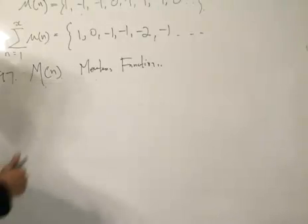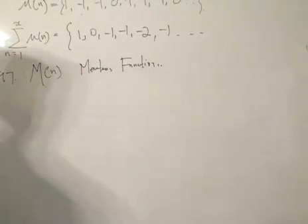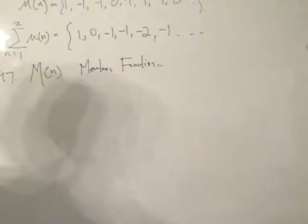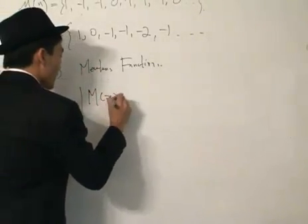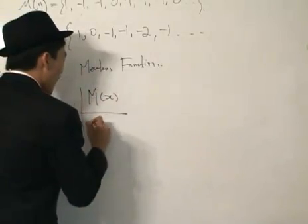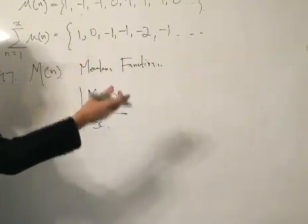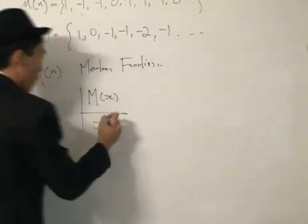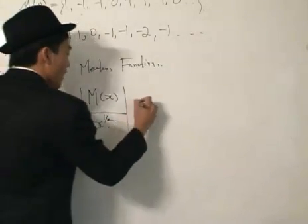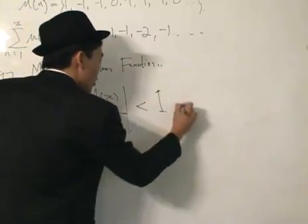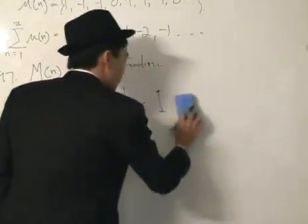In the same year, Franz Mertens, the person who discovered the function, made a conjecture: the modulus of the Mertens' function divided by x to the power of half is less than 1.